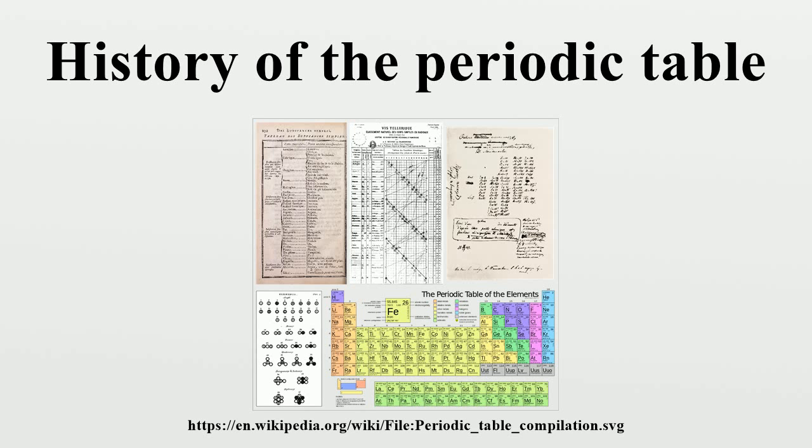The history of the periodic table reflects over a century of growth in the understanding of chemical properties. The most important event in its history occurred in 1869, when the table was published by Dmitri Mendeleev, who built upon earlier discoveries by scientists such as Antoine Laurent de Lavoisier and John Newlands, but who is nevertheless generally given sole credit for its development.